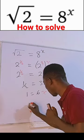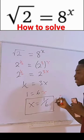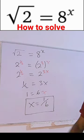We're looking for x, so we divide each side by 6 to get x equals one-sixth. And that's that! Don't forget to subscribe.